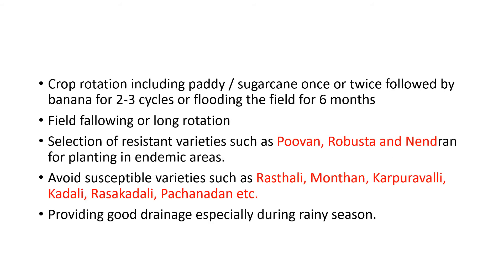The main crux of this video is how to control Panama disease. The first method is crop rotation — since there is no definitive controlling agent, you must clear up the soil. Crop rotation should involve paddy and sugarcane, followed by banana for two or three cycles, or you can flood the field for six months. Crop rotation is very key to controlling Panama disease.